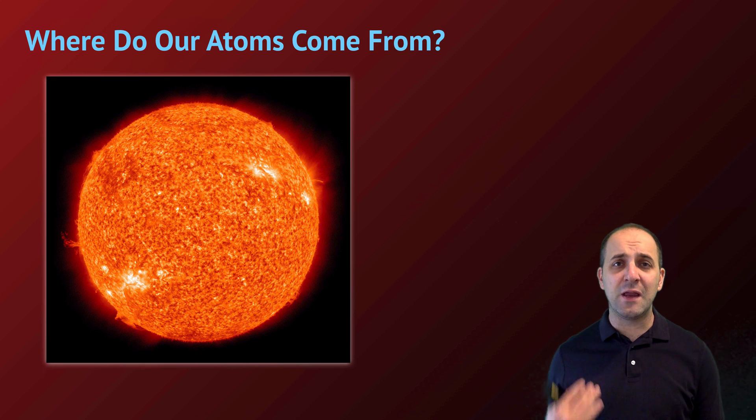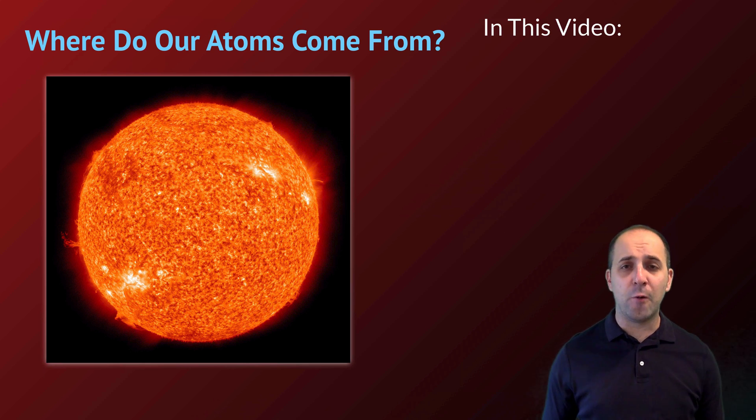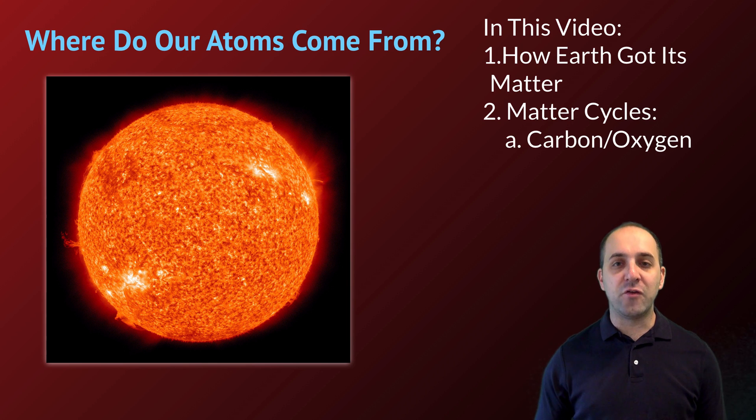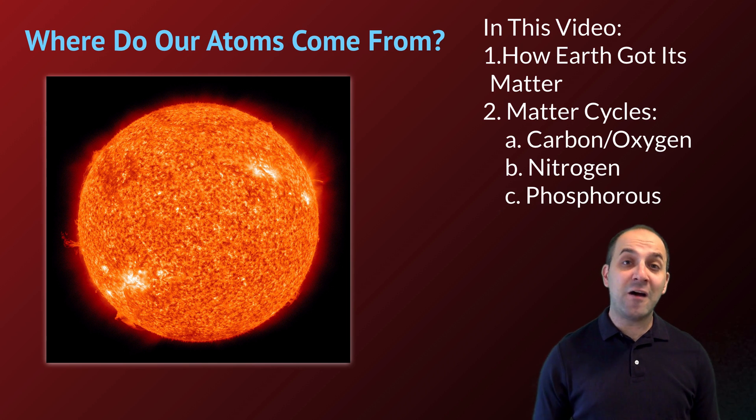So the question that we're trying to answer in this video is, where do our atoms come from? And so here we're going to talk a little bit, really briefly, about how the Earth got its matter, and then we're going to talk about matter cycles. We'll do the carbon and oxygen cycles, the nitrogen cycle, the phosphorus cycle, and the water cycle.